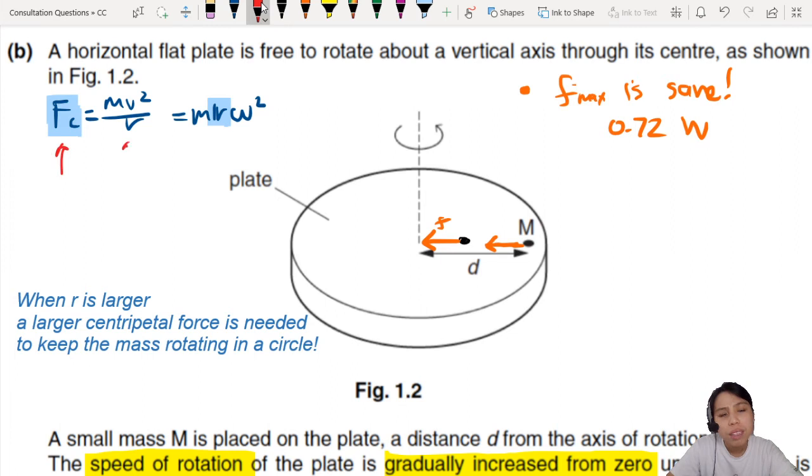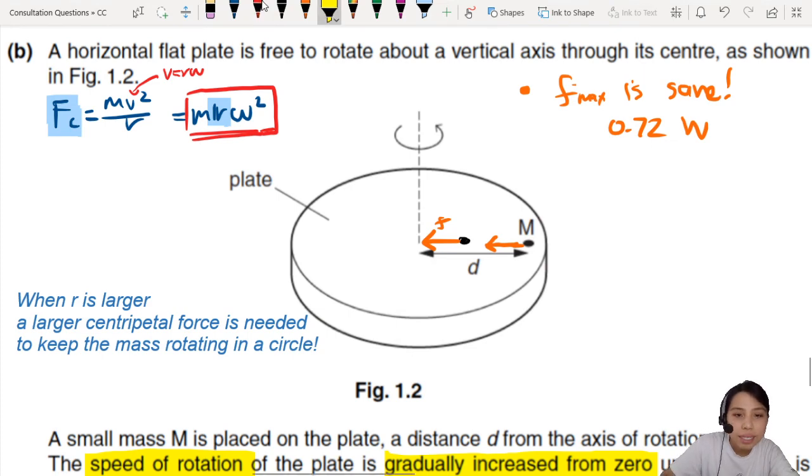What is centripetal force? Mv squared over R or Mr omega squared. The further you are away from the center, the larger a centripetal force you need in order to go in a circle. When R is larger, if you are further away, you will need a larger centripetal force in order to move in a circle.